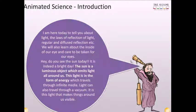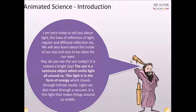I am here today to tell you about light, the laws of reflection of light, regular and diffused reflection, etc. We will also learn about the inside of our eye and care to be taken for our eyes. Hey, do you see the sun today? It is indeed a bright day. The sun is a luminous object which emits light all around us. This light is in the form of energy which travels through infinite media. Light can also travel through a vacuum. It is this light that makes things around us visible.